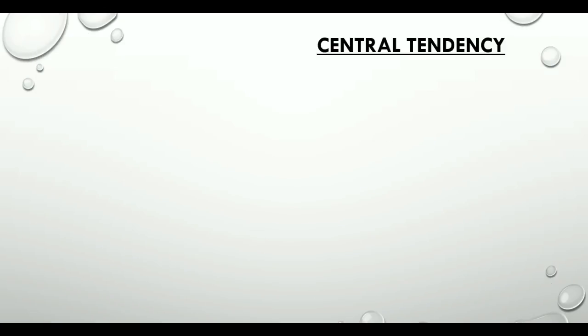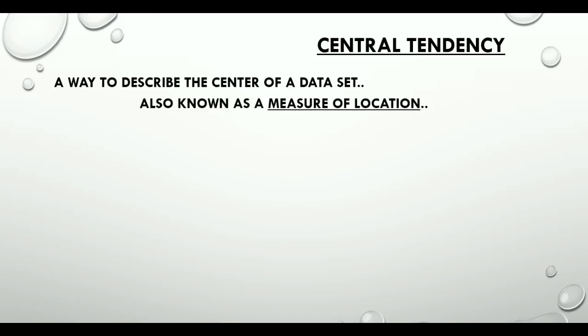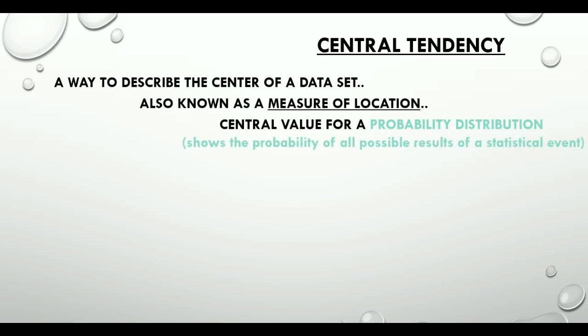So what do we mean by central tendency? Well, it's a way to describe the center of a data set. The tendency of the data units to move closer to the center. It is also known as a measure of location. It indicates the central value for a probability distribution. Let's not worry about probability distribution now because we will have a separate video where we will talk about different types of distributions.